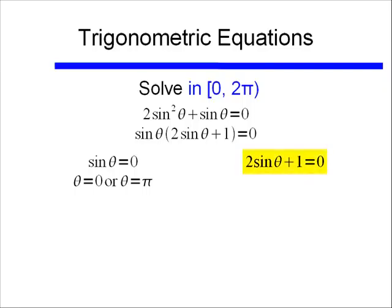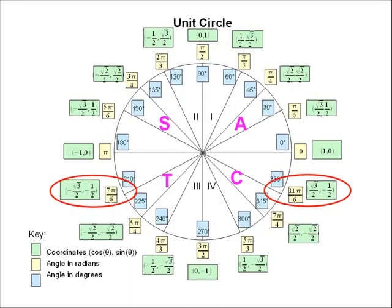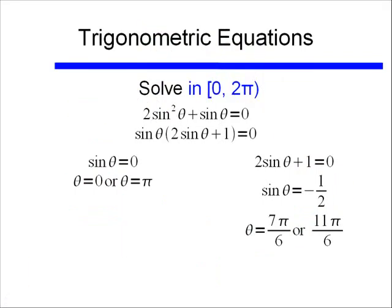Let's go look at our other factor. If I solve this for sine of theta, I'll subtract 1 from both sides and then divide by 2, then I find that sine theta is equal to negative 1 half. And where does sine of theta equal negative 1 half? Again going back to my unit circle, that occurs at 7 pi over 6 and 11 pi over 6. So I'll go back and I'll write theta is equal to 7 pi over 6 or 11 pi over 6.